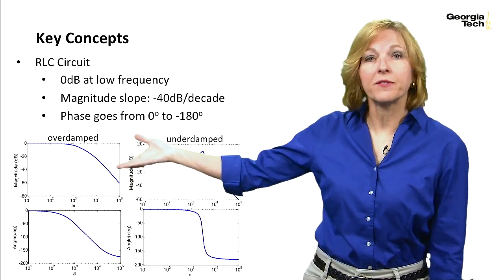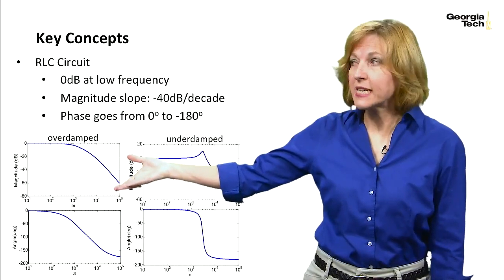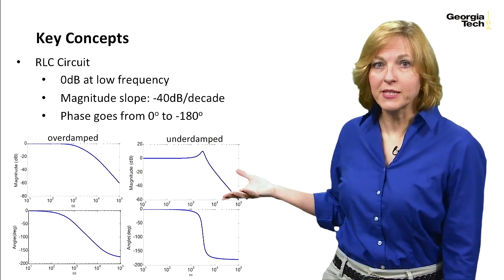And the characteristic of an overdamped Bode plot looks like this. The characteristic of an underdamped Bode plot looks like this.